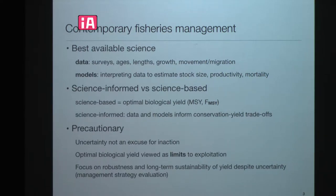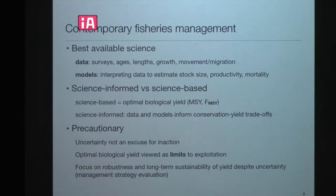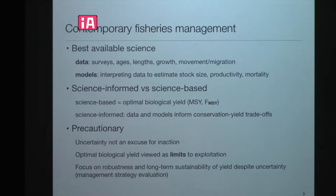That science is used in what a lot of people would like to think are science-based decisions in fisheries management, but they're really not. Most of them are science-informed. A science-based decision would use optimal biological yield or MSY in terms of yield, or FMSY which is the fishing mortality. These things are almost never implemented in practice because they're often seen as too optimistic and too aggressive. What we do now involves making trade-offs — science really informs trade-offs between conservation and yield. A lot of times we give up yield for some assurance that stocks are not going to collapse.